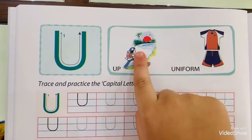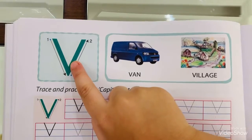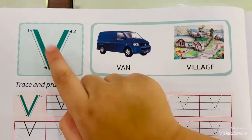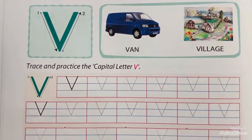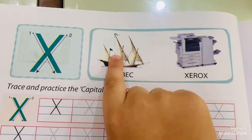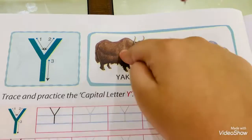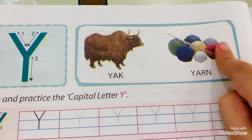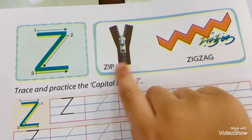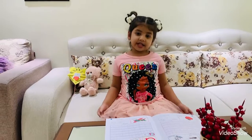U for umbrella, U for uniform. V for vase, V for violin. W for wall, W for wheel. X for xylophone, X for extract. Y for yacht, Y for yarn. Z for zip, Z for zebra. Now I know my ABC. Next time I want you to sing with me.